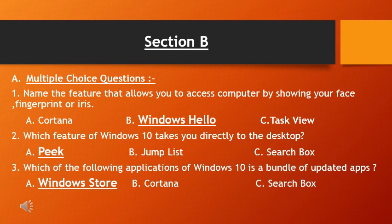Coming to the multiple choice questions. First question: name the feature that allows you to access the computer by showing your face, fingerprint, or image. The options are Windows Hello, Cortana, and Task View. Cortana is the search tool, and Task View is used to create multiple desktops. For security access by face or fingerprint, Windows provides the feature Windows Hello — so option B, Windows Hello, is correct.